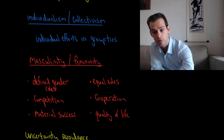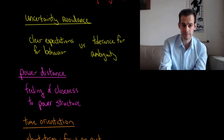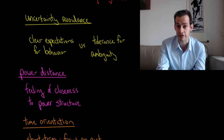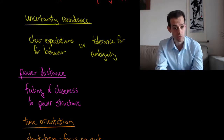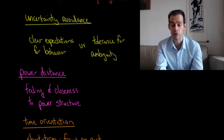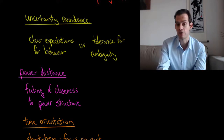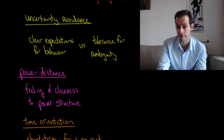The next cultural dimension is what Hofstede called uncertainty avoidance, and this is how much cultures are able to tolerate uncertainty. Do they like to have clear expectations for behavior where there are strict rules of etiquette, or are they more tolerant of ambiguity, where there are situations where it's not clear how you're supposed to act and there are not clearly defined cultural rules for behavior?